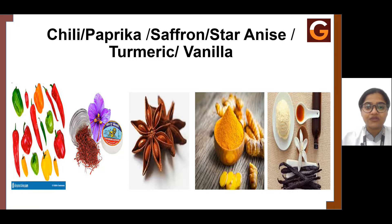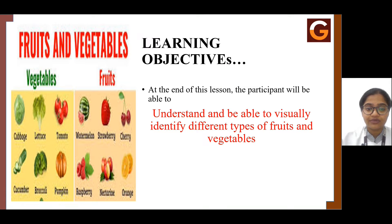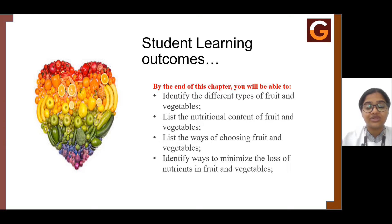Now let's understand the next chapter — again under Ingredients Used for Cooking, Chapter 3 electives. In this upcoming chapter, we will understand about the different classifications of fruits and vegetables. The learning objective is that by the end of this chapter, you will be able to identify different types of fruits and vegetables, understand the right method of purchasing, the right method of storage to increase durability, and understand the nutritional values obtained from fruits and vegetables.